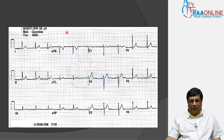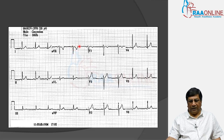Normally, if you look at lead AVR, the entire complex is negative. In a normal electrocardiogram, the P wave is negative, QRS is negative, and T wave is negative.